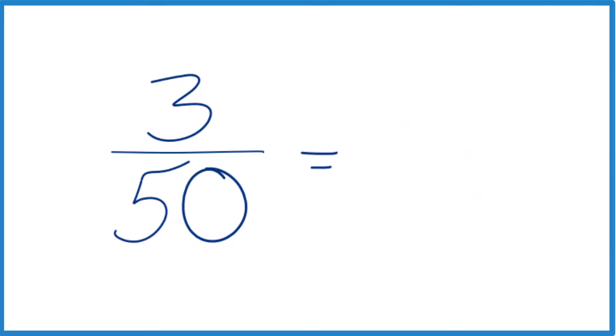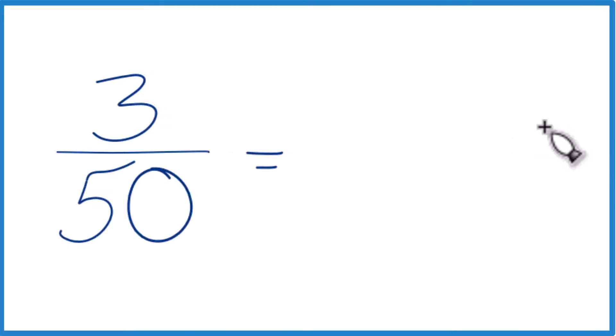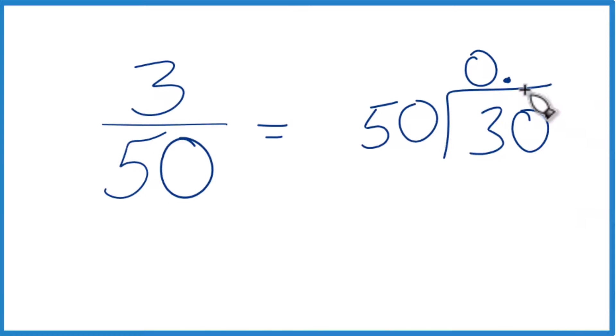We could also do this by long division. We could take 3 and see how many times 50 goes into 3. So 50 doesn't go into 3, but if we write 0 and a point here, we could call this 30. It still doesn't go into 30.